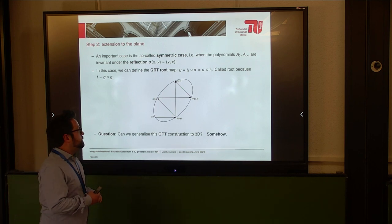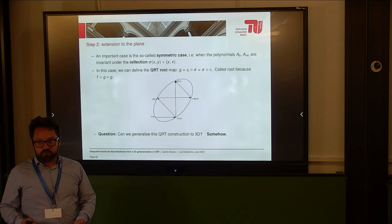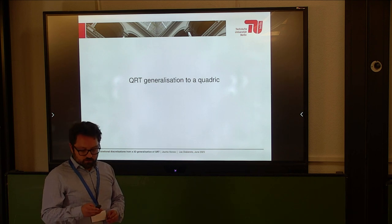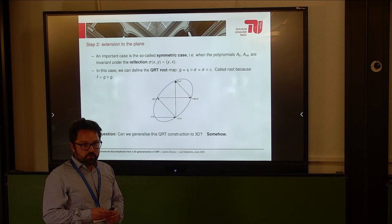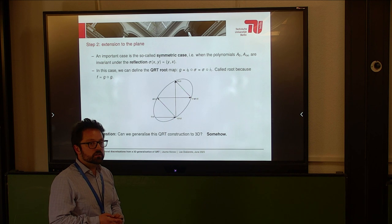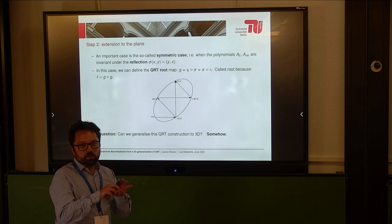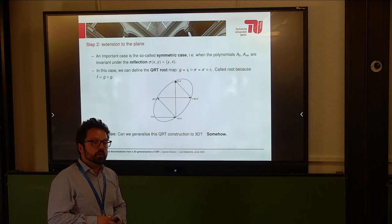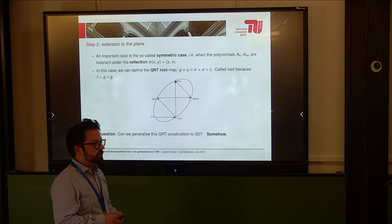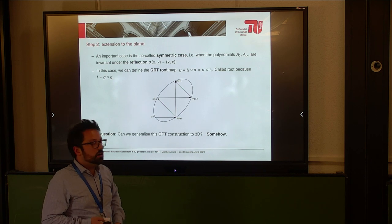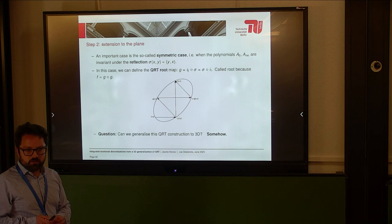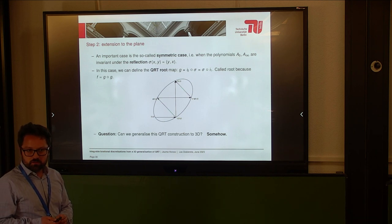Somehow. Not always, but under certain conditions yes. There have been other generalizations of QRT to three dimensions, but they were not suitable for Kahan discretization, so we have to make our own. There is a discussion about blowing up the eight base points to get a family of elliptic curves — this is related to autonomous discrete Painlevé equations and elliptic surfaces. The problem with discrete Painlevé is that sometimes you don't have an integral of motion in the classical sense, though you have autonomous versions where it becomes elliptic curves.